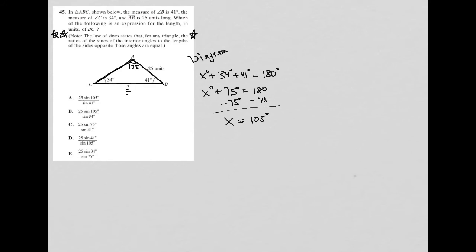So the note says, the law of sines states that for any triangle, the ratios of the sines of the interior angles to, okay, so here we go. So ratio on this test means fraction. So we're talking about the ratio of the sines of the interior angles. So let's say sine angle A, for instance. So since it's a ratio, I have a fraction bar.